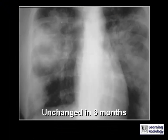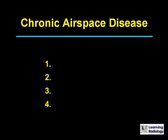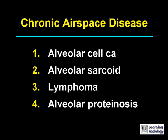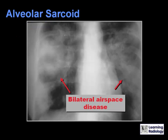This is the next differential: chronic airspace disease. There are four causes: alveolar cell carcinoma, alveolar sarcoid, lymphoma, and alveolar proteinosis.